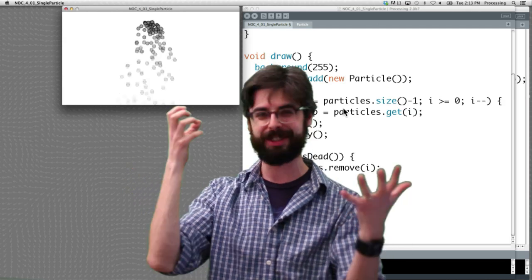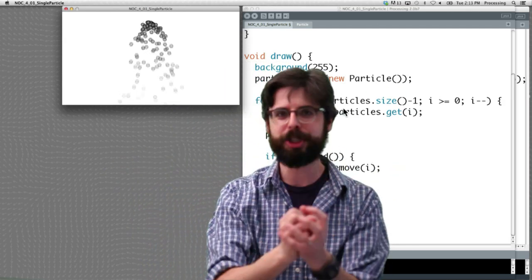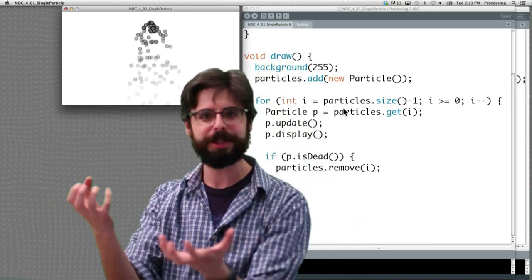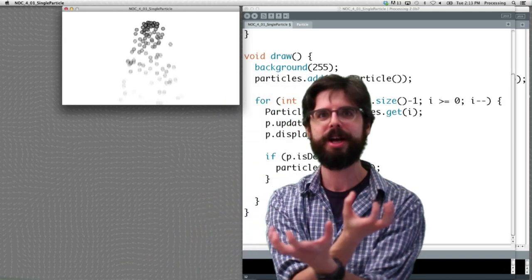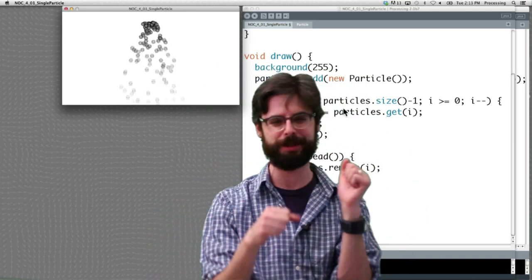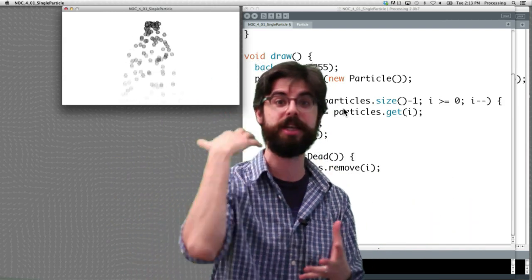Particle is an object. Right now we have an ArrayList of objects. But we want to have an object that is the ArrayList of objects. Particle is an object. The system is an object. And then we could eventually have a system of systems. A list of particle systems. Then we could have a system of system of systems. Could go on forever. But this is our goal and that's what we're going to do in the next video. Thank you.